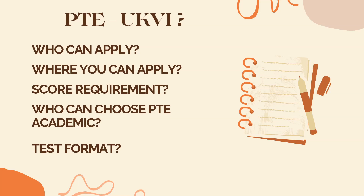For all these kinds of visas, the score requirement is 43 — meaning 43 in speaking, 43 in writing, 43 in reading, and 43 in listening. So you can say 43 overall as well. This is all about UKVI.